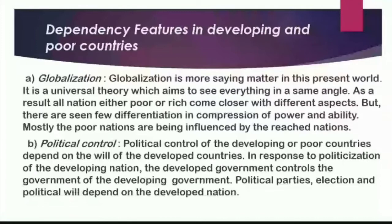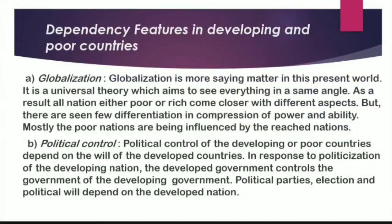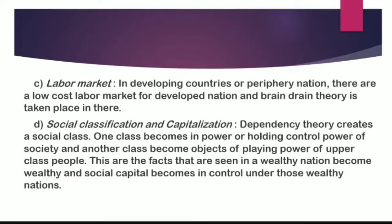The second feature is political control. The political situation of developing or poor countries depends on the will of developed countries. The developed government controls the government of the developing nations. Political parties, elections, and political will depend on the developed nations. The third feature is the labor market: in developing countries, or periphery nations, there is a low-cost labor market for developed nations and brain drain is taking place.